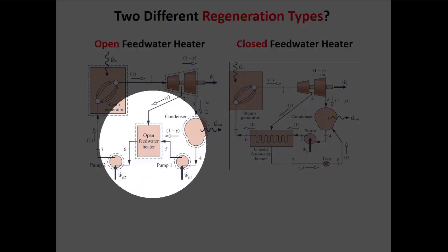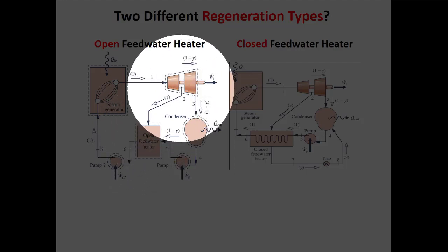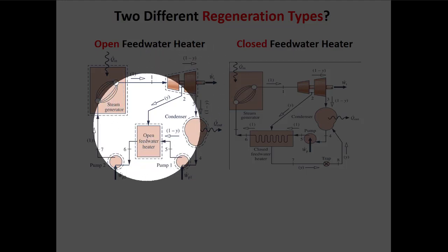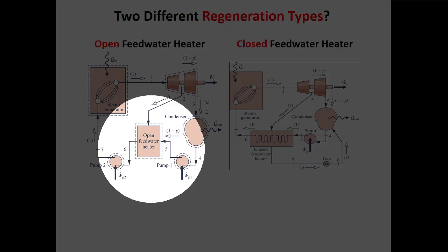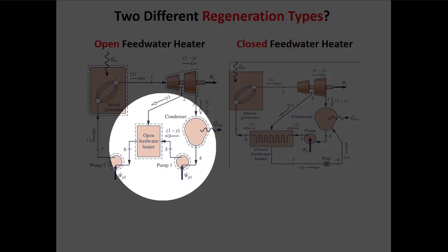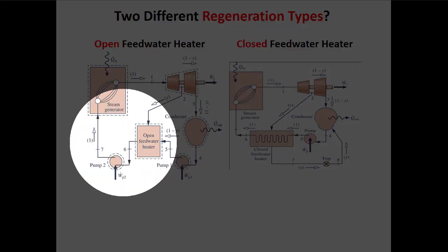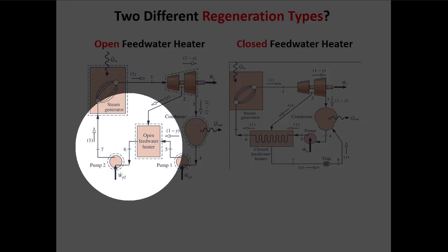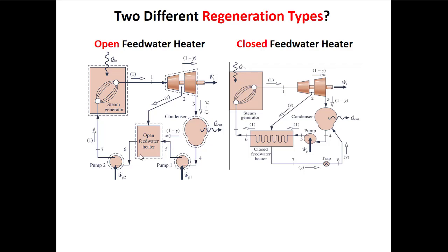Generally, there are two different types of regeneration systems, defined by what happens in the feed water heater. The feed water heater is the heat exchanger used to transfer heat from the hot flow bled off after the first turbine to the cold flow that's been condensed. In the open feed water heater, two streams of mass meet together under the same pressure in a reservoir — like a sink with a hot tap and a cold tap mixing in a basin. You have two inlets and one outlet: the hot side, the cold side, and a warm fluid coming out at state six.